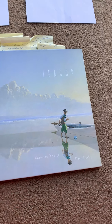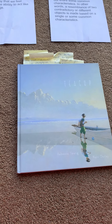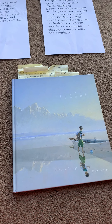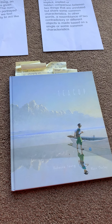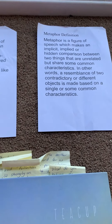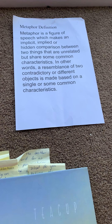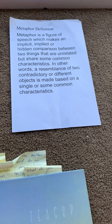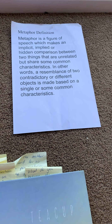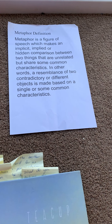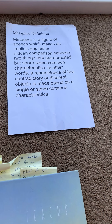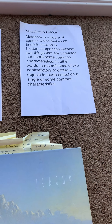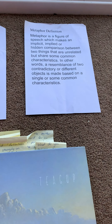Before we begin reading the text, as I mentioned, our learning intentions and success criteria are linked to the literary devices that authors use. We're looking specifically at metaphor. A metaphor is a figure of speech which makes an implicit, implied, or hidden comparison between two things that are unrelated but share some common characteristics — in other words, a resemblance of two contradictory or different objects made based on a single or common characteristic. If that's not clear at this point, we're going to explore it through some very careful questioning in the text.